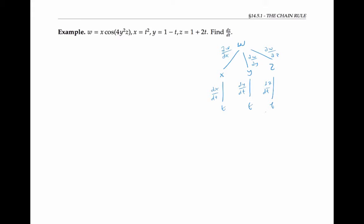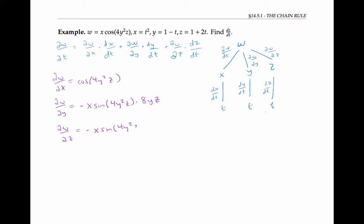You should get the following. To complete the problem, we need to calculate some derivatives. Partial w partial x is cosine of four y squared z. Partial w partial y is negative x sine four y squared z times eight y z. Partial w partial z is negative x sine four y squared z times four y squared. We also have that dx/dt is two t, dy/dt is negative one and dz/dt is two.